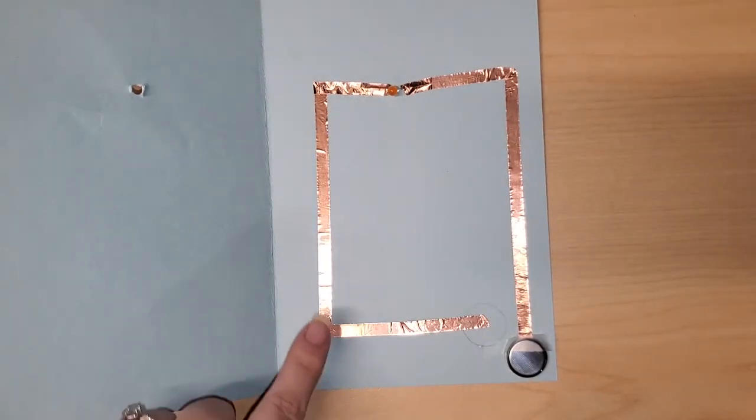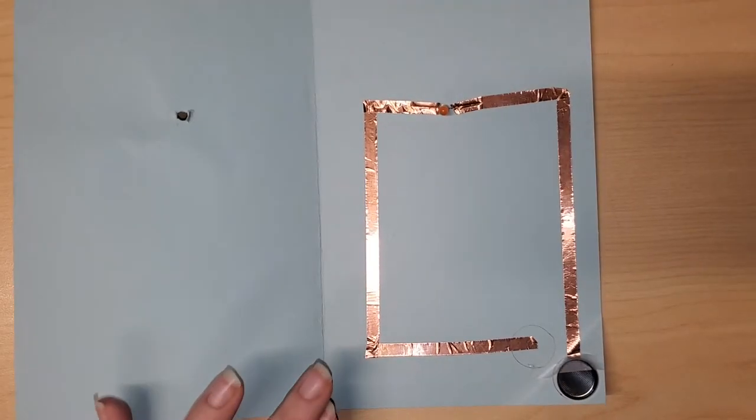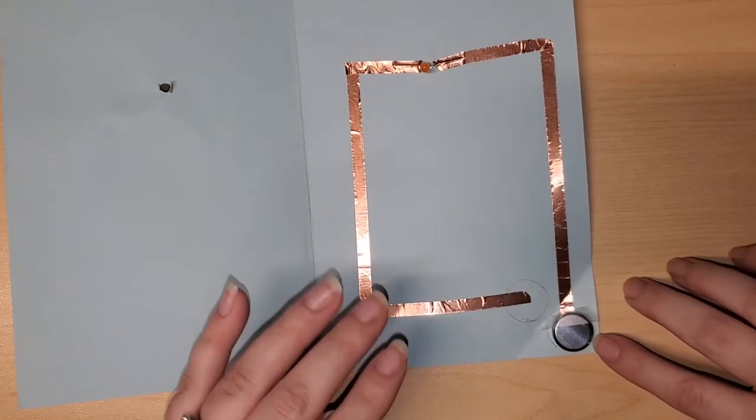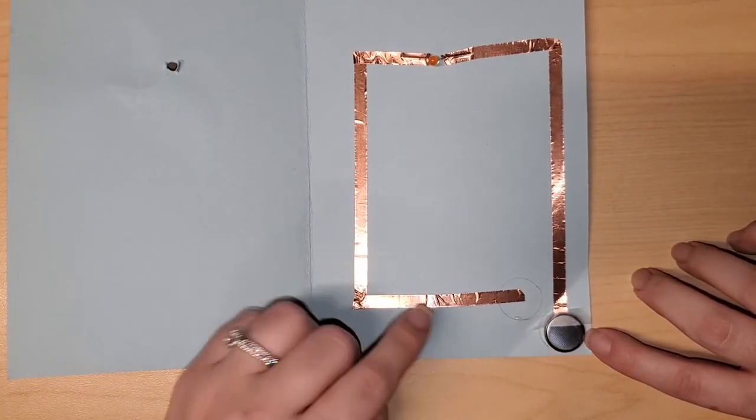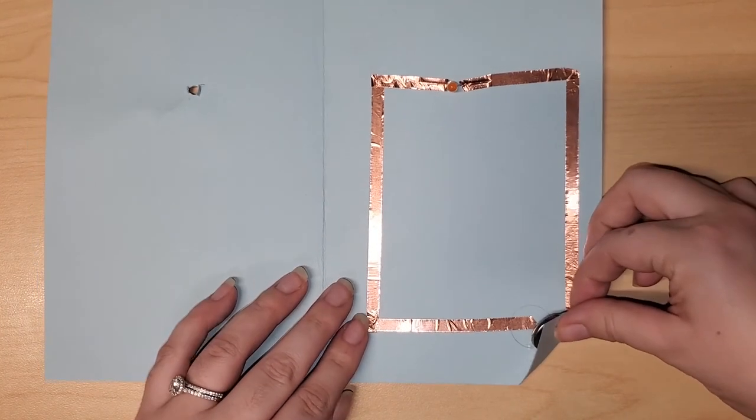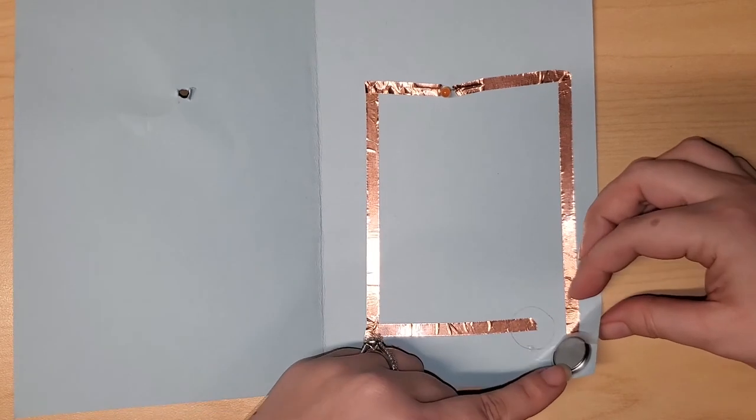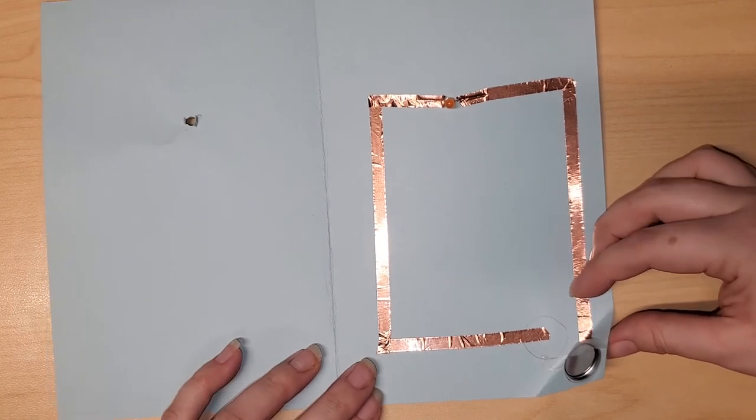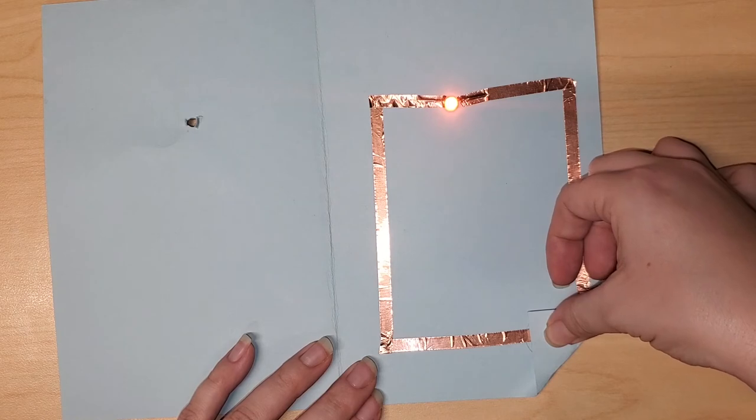Okay friends get ready because this is probably the most exciting part. So what you will do in order to make your LED light up, you're going to take the battery and fold your card over. Fold it so that the battery - this is the negative side - is going to be touching the piece of copper tape that's connected to the negative pin of the LED. Whoa, and it lights up! How cool!